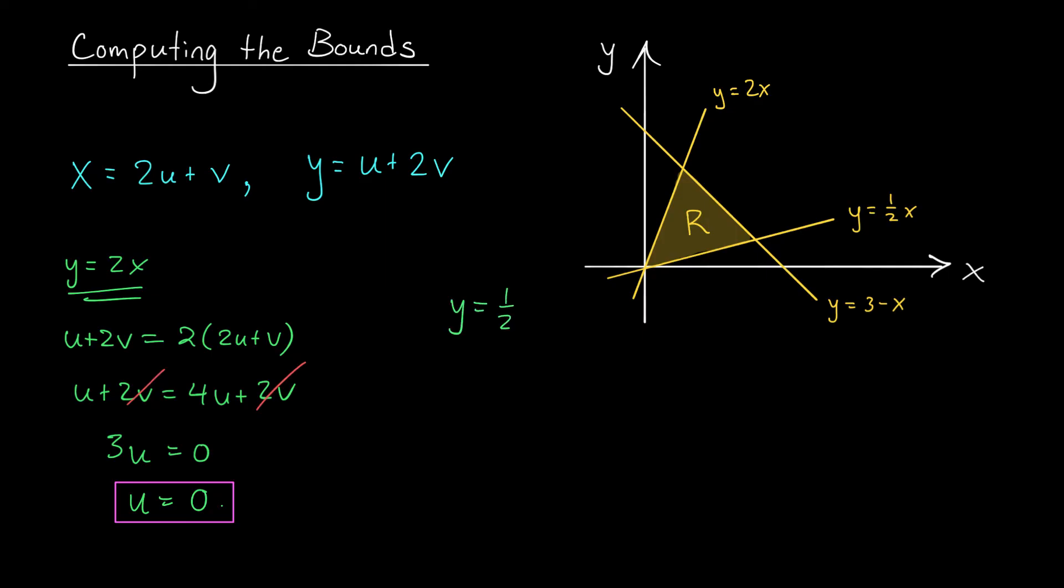We'll consider y = 1/2 x. Now I replace y with u + 2v and I replace x with 2u + v. When I simplify I get u + 2v = u + 1/2 v. This time I throw out the u's. Subtracting 1/2 v on both sides I get 3/2 v = 0 and therefore v = 0. Oh this is awesome. It looks like I have two lines in my xy plane that are getting mapped to two very simple lines in my uv plane. My region is simplifying.